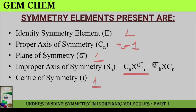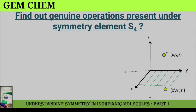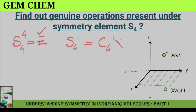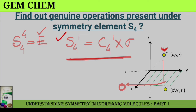In the next part we deal with the genuine operations under the symmetry element S4. When we perform S4 four times we get back the identity element E. For S4¹, we have C4¹ into sigma. If you take a point, rotate it by 90 degrees and then reflect it, it obtains a new position. So S4¹ is considered a genuine operation.